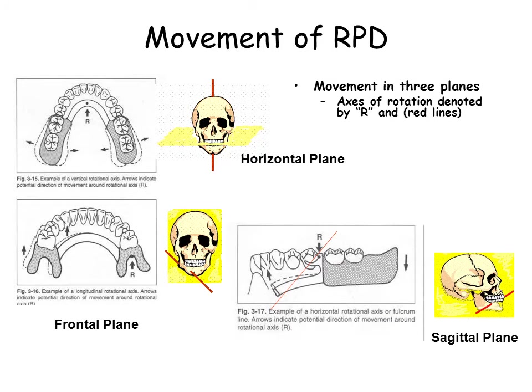RPD movement occurs in three planes. Managing these movements with good design increases patient comfort while reducing stress to the supporting tissues. An understanding of these three basic movements can simplify the study of partial dentures. The partial denture exists in a dynamic environment under the influence of the structures of the oral cavity. The first movement in the horizontal plane is referred to as fish tailing. Buccal-lingual movement of the partial denture is both traumatic to the abutment teeth as well as the residual ridge. Stabilizing components may be added to the partial denture to resist this type of movement.